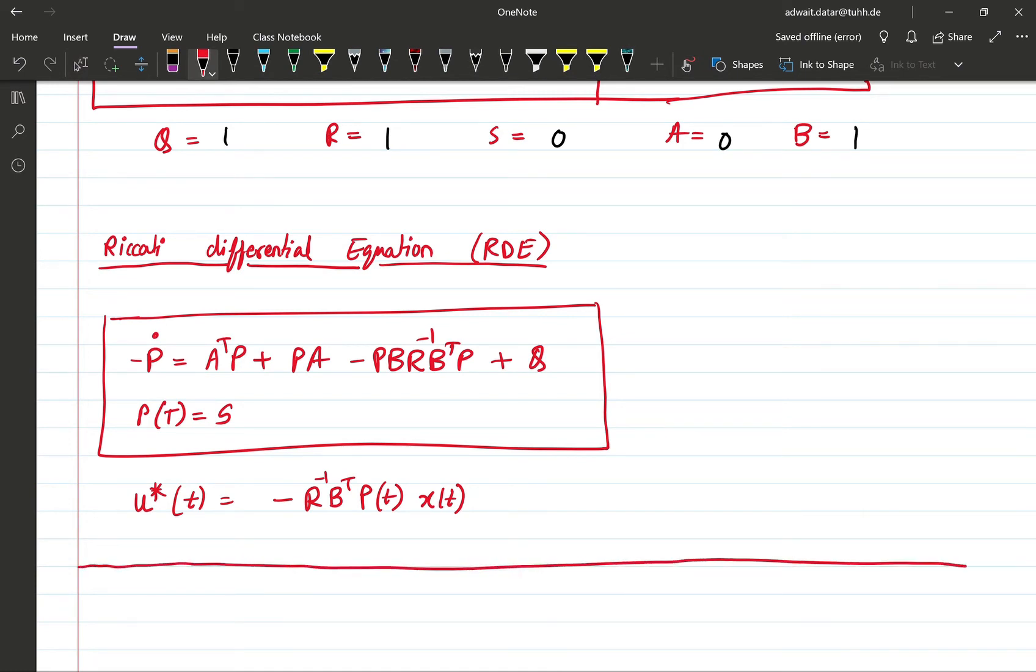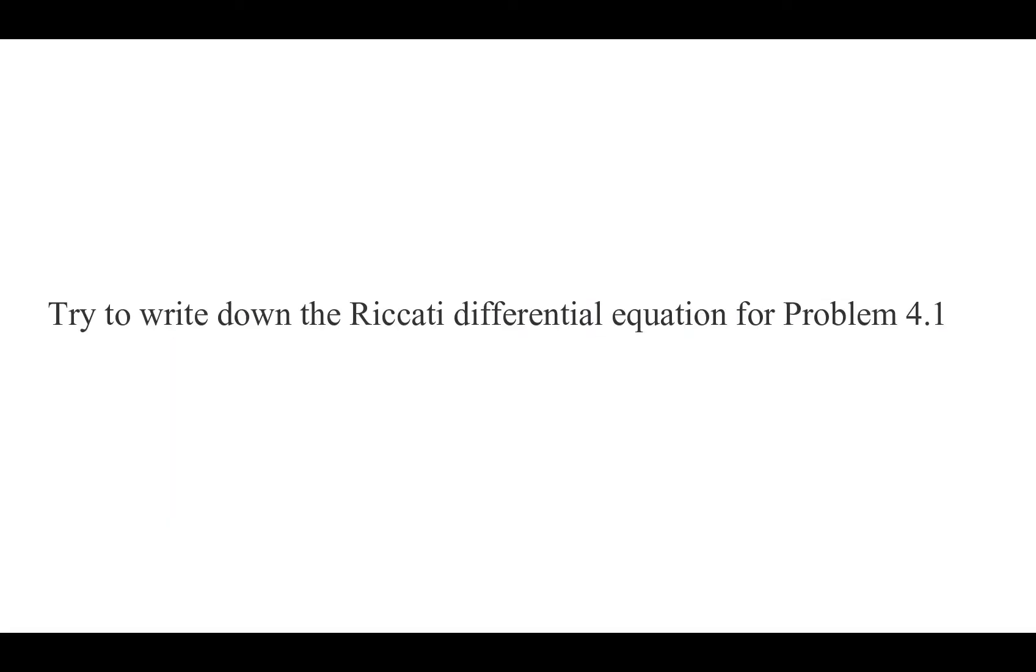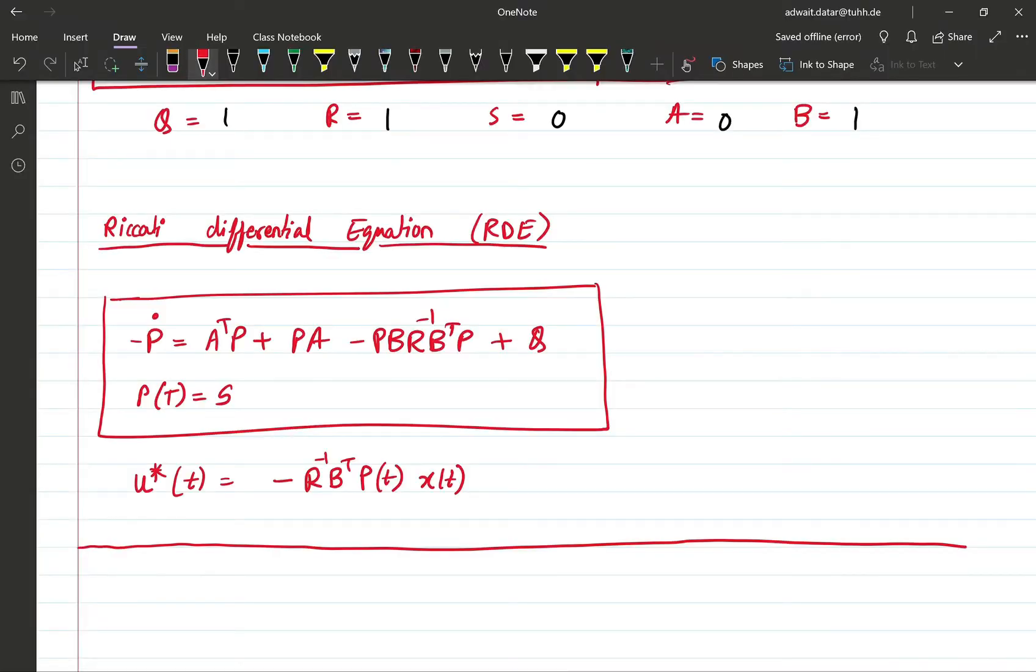Now let's apply this for our problem because we know the values of Q, R, S, A, and B. Let's write down the Riccati differential equation for our problem. So we have -Ṗ equal to, A is 0 so these two terms are 0, B and B transpose are all 1, so we will have -P² and Q is 1 so +1, and we will have the final value on P to be 0 because S is 0.